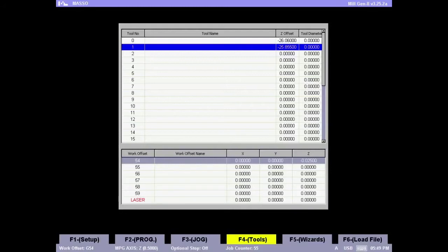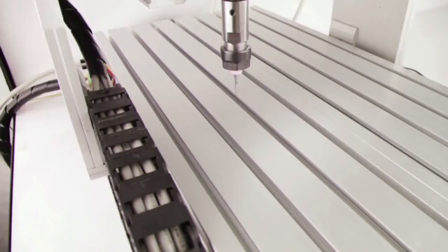You can repeat the same steps for calibrating all your tools. With Masso you can calibrate up to 32 tools in the tools library. So those were the steps on calibrating the tool heights. And there is another easy way to automatically calibrate the height of the tools, and that is using a touch off plate.